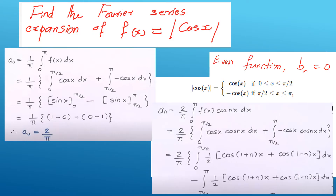Now let us evaluate another function: f(x) = |cos x|. First, check whether |cos x| is even or odd. Substituting −x: cos(−x) = cos x, so f(−x) = f(x). Therefore this is an even function, and the bₙ coefficients are zero.